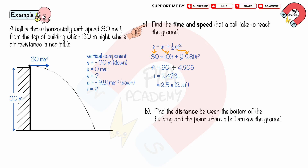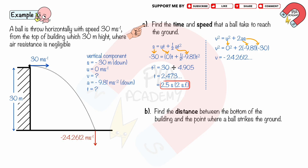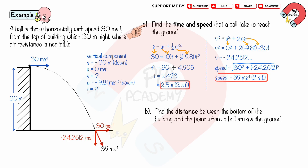We get t equals 2.5 seconds for two significant figures. Using v squared equals u squared plus 2as, substituting u equals zero, a equals negative 9.81, and s equals negative 30, we get v equals negative 24.26 meters per second downward. Combining this vertical velocity with the horizontal velocity using the Pythagorean theorem, the speed at which it hits the ground is 39 meters per second. The direction is at angle theta to the horizontal, giving theta equals 39 degrees.